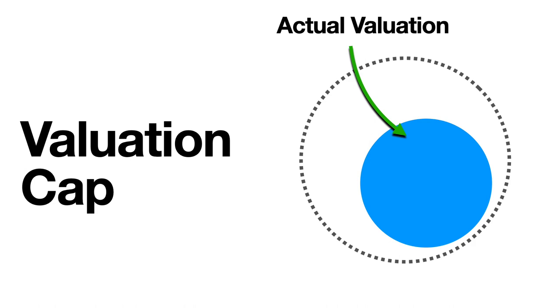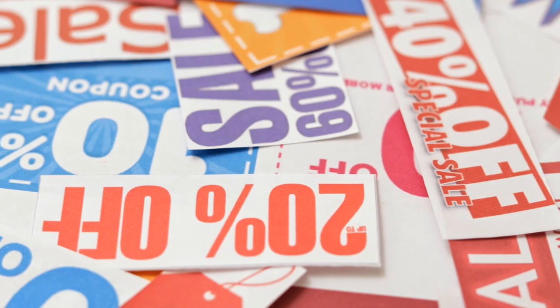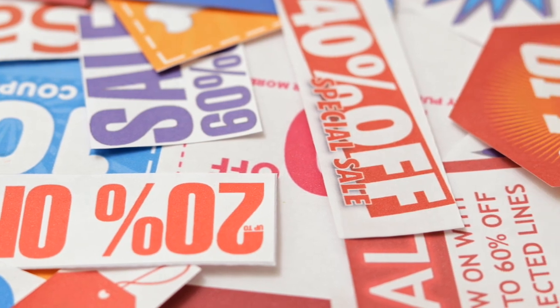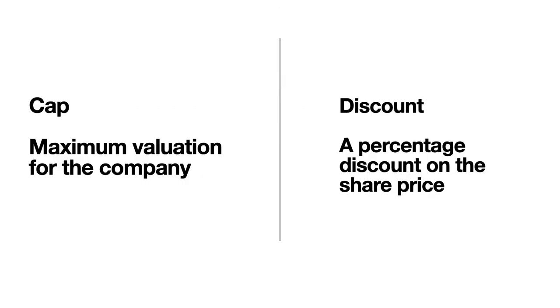They're saying something really simple. They're promising the investor will get a certain amount of equity, and the company's valuation when they get that equity will be no higher than the cap. The second part is the discount, and this is just a reduction in the price of the shares. It used to be common to have both a cap and a discount, but now the common practice is to either have a cap or have a discount in your SAFE agreement.